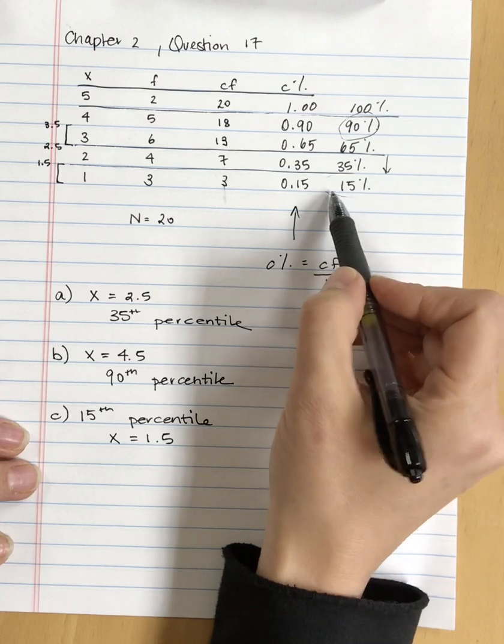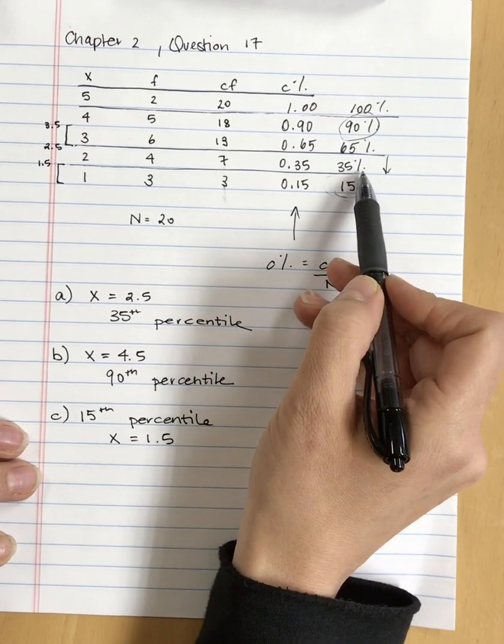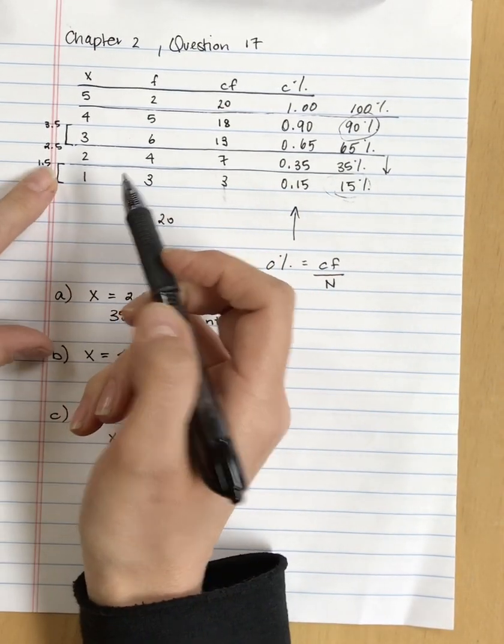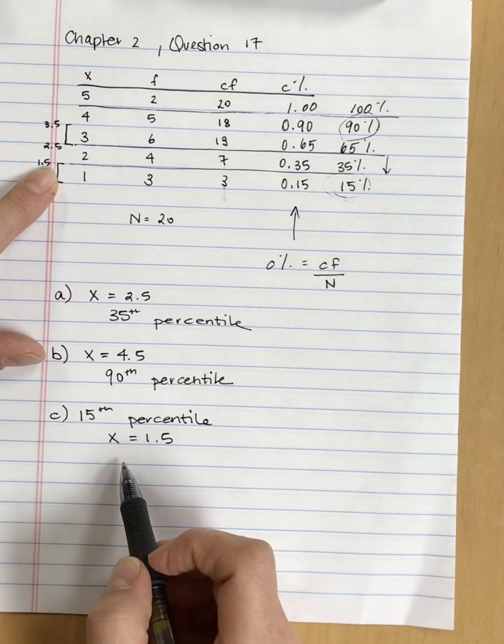But this one's relatively easy. We can look and find the 15th percentile and read across and find that it is associated with an x-score of 1.5.